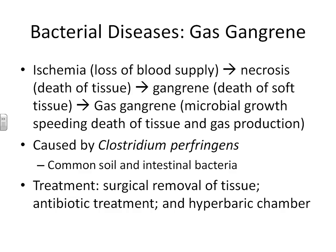Once necrosis occurs, you can develop gangrene, which is death of soft tissue. Up until this point, none of this has had anything to do with bacteria. Once someone has gangrene, a bacteria called Clostridium perfringens, commonly found in the soil and intestines, can move into that dead tissue. Clostridium perfringens is an obligate anaerobe, so when your tissue is dead, this bacteria loves to grow in it. The growth of this bacteria leads to gas gangrene, which speeds up the death of your tissue and leads to gas production.